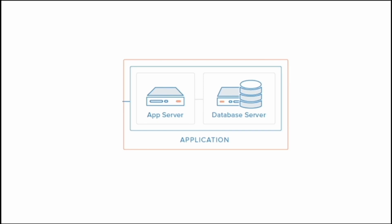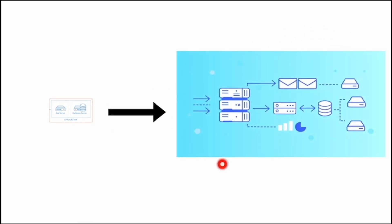When we create a software application from scratch, we build a very basic MVP product. We host everything on a single machine — the application logic and the database server on a single node. As time passes and people start using our application, this simple single-machine application grows to become a complex application hosted across multiple machines. In this video, we are going to see that journey.